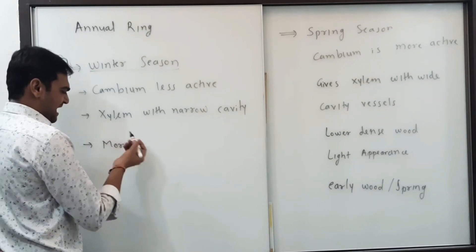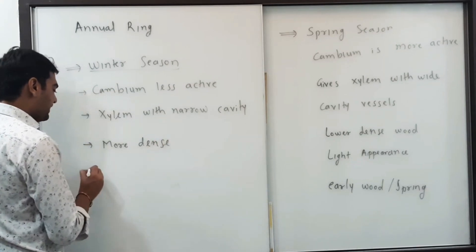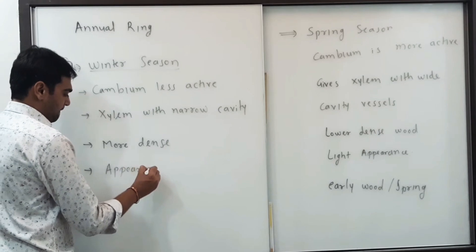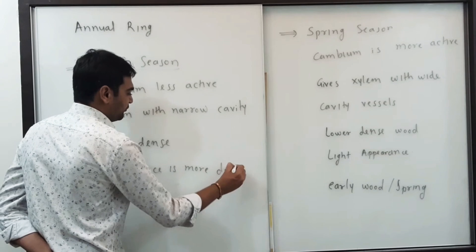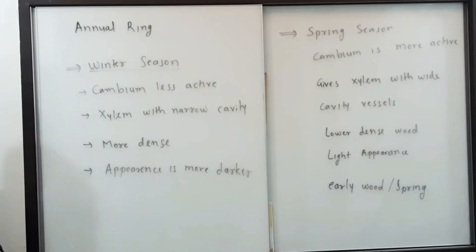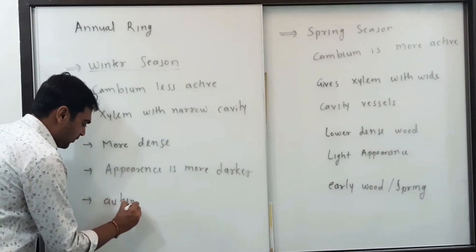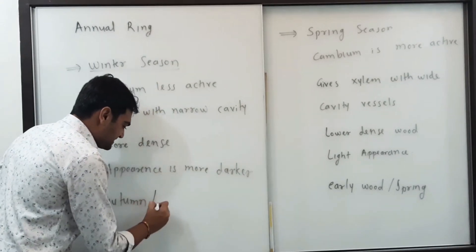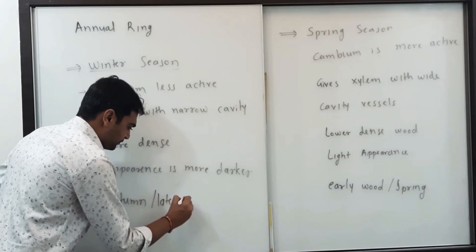Due to narrow cavity vessels in the xylem, the xylem is more dense with less porosity, and the appearance or color is darker. The wood formed due to this winter activity of the cambium is called autumn wood, and since it is formed later than the spring wood, it is also called late wood.